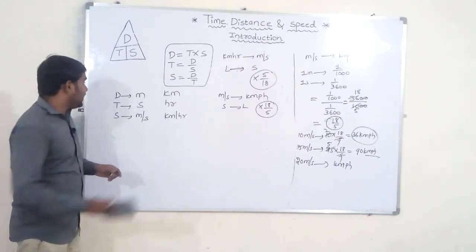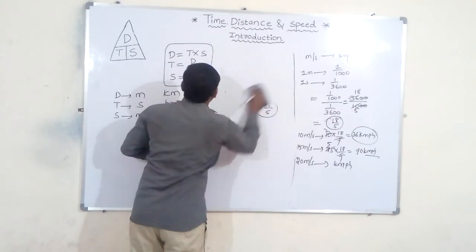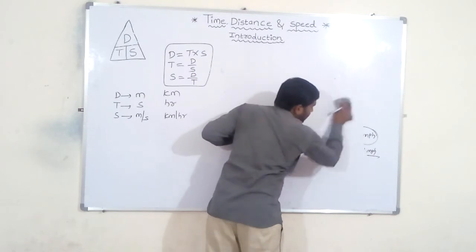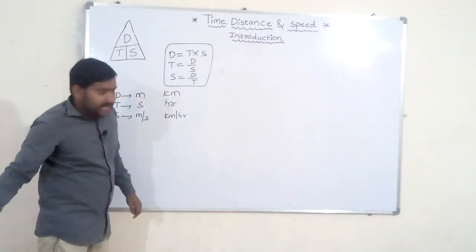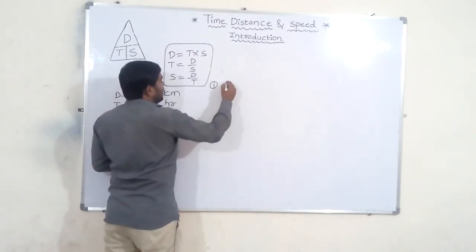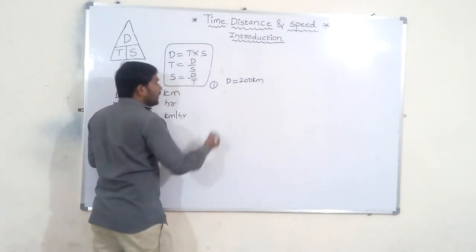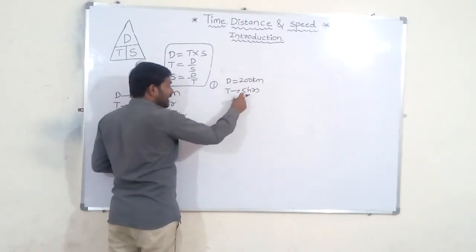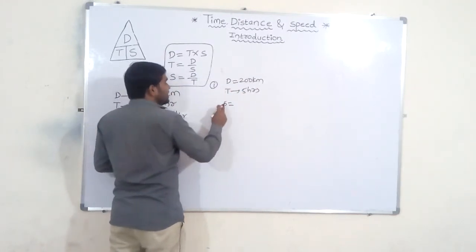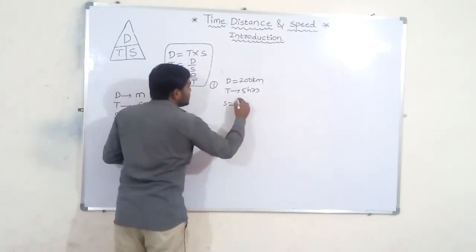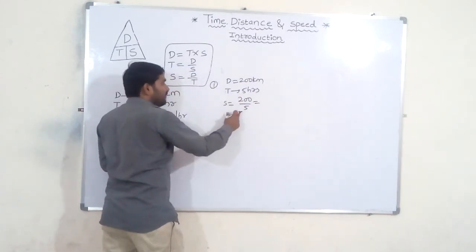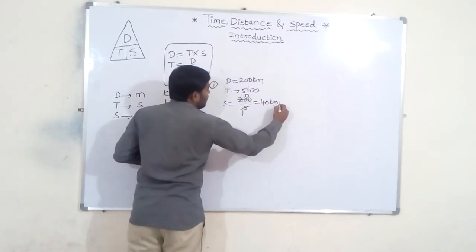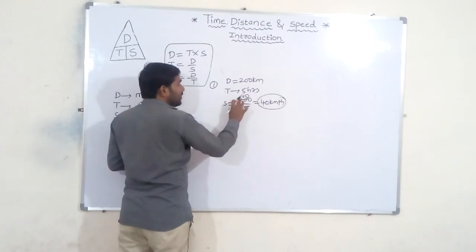Let's solve three problems. First problem: distance is 200 kilometers, time is 5 hours — find the speed. Speed equals distance by time, so 200 by 5 equals 40 kilometers per hour. The speed is 40 kilometers per hour.